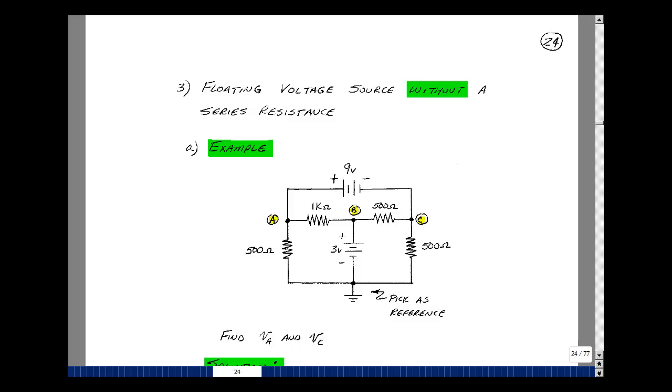This lesson deals with analyzing circuits with a floating voltage source without a series resistance. You can find these notes in the ECE-201 e-book in Chapter 3, starting on page 24.